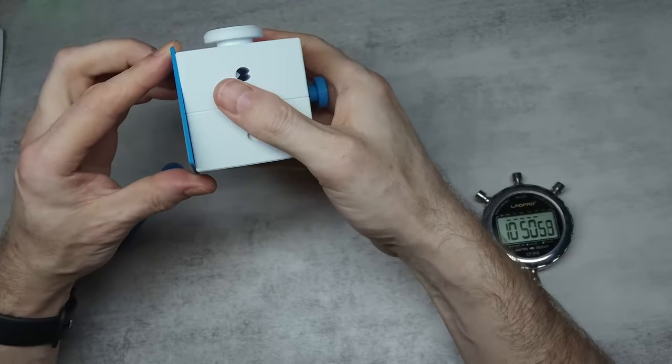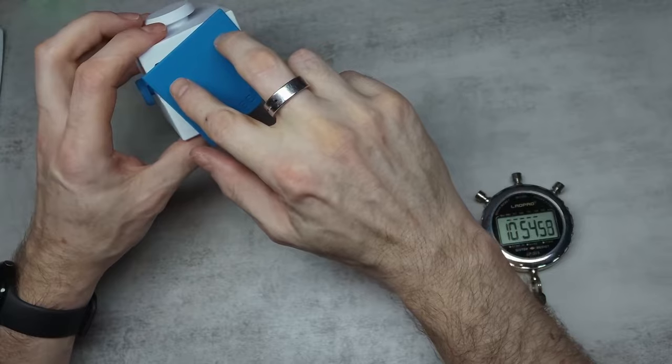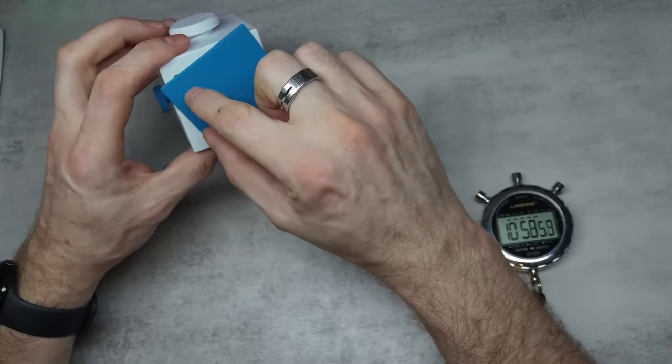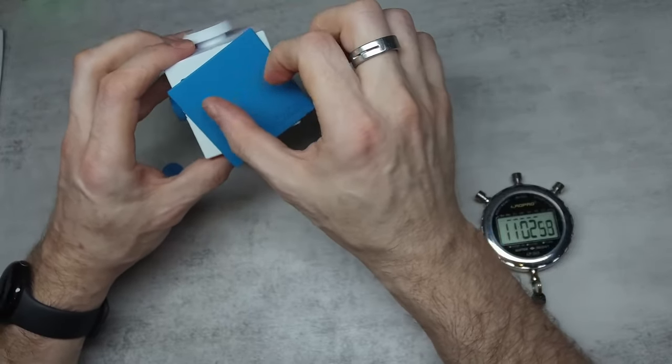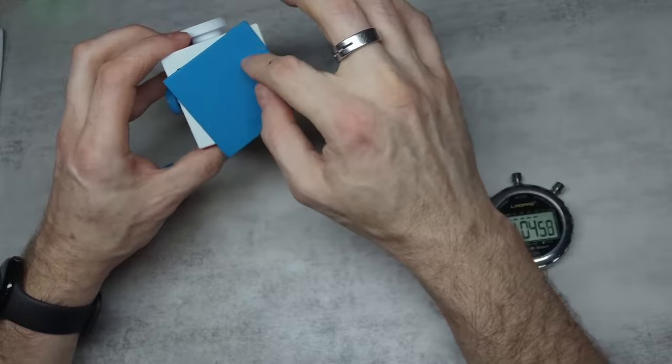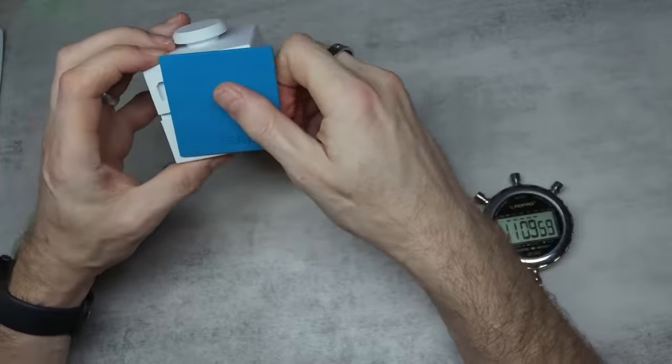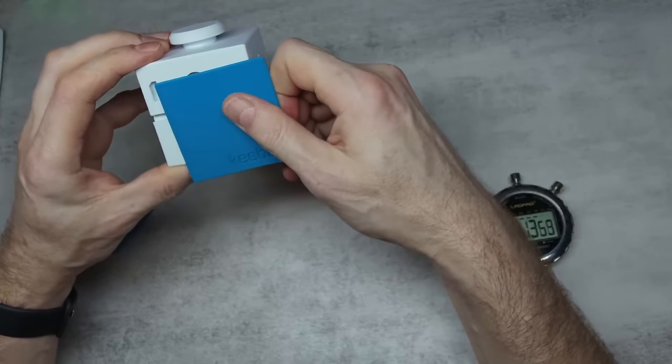So I think what's going on is we've got two pieces that stick out of this plate and they are working their way through a maze or two mazes independently, well not independently because they're connected to this, but separately from each other.